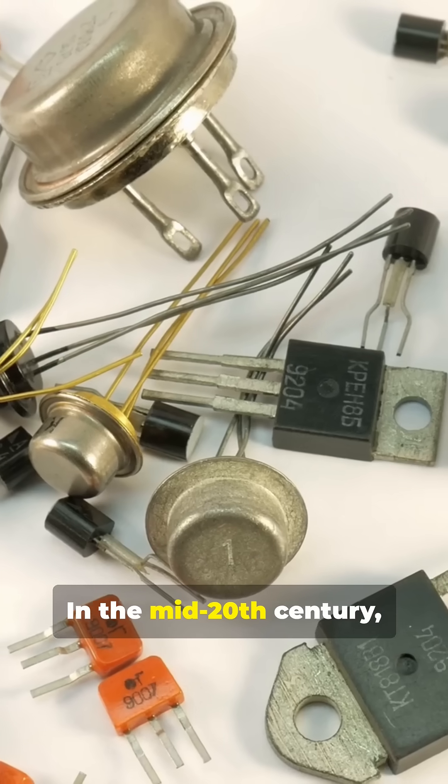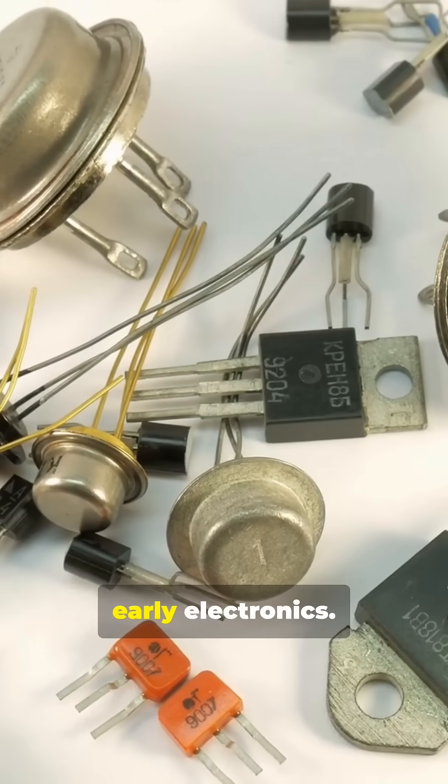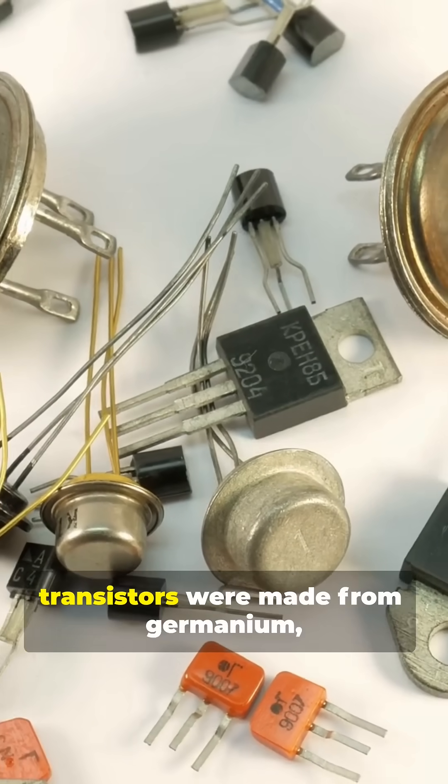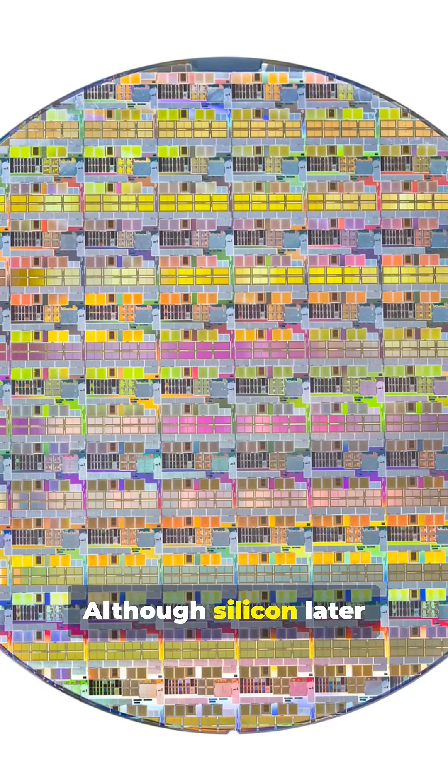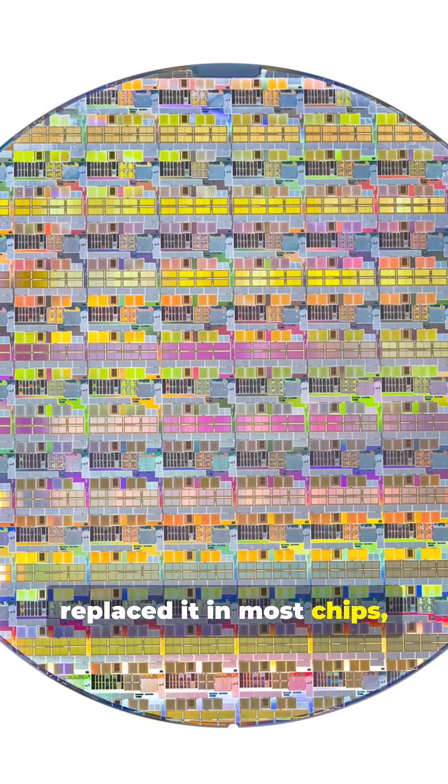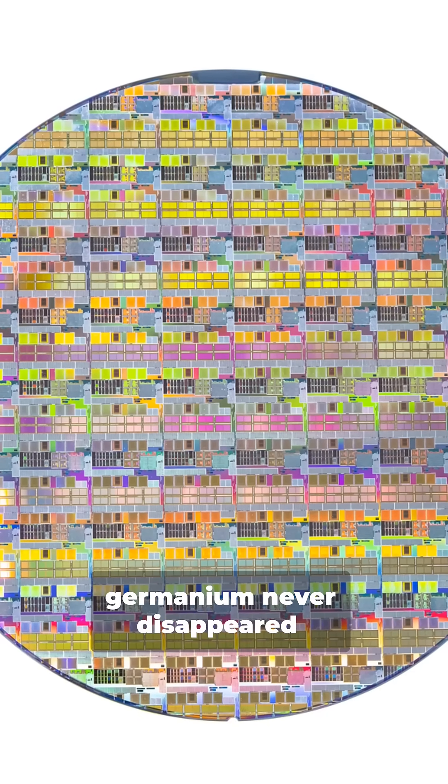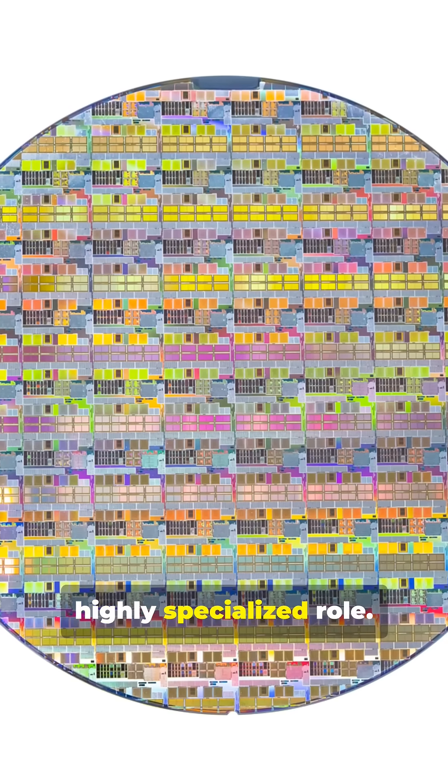In the mid-20th century, germanium became the heart of early electronics. The first practical transistors were made from germanium, not silicon. Although silicon later replaced it in most chips, germanium never disappeared. It found a different, highly specialized role.